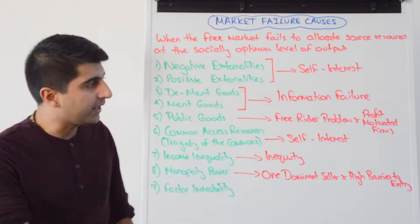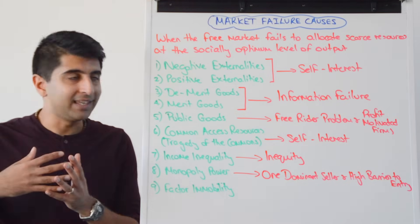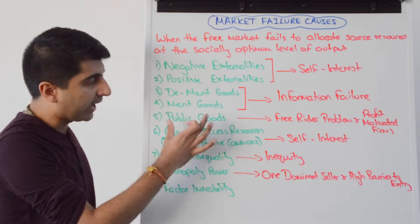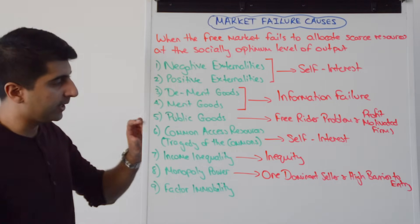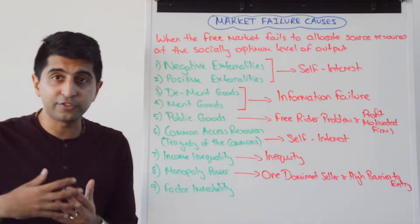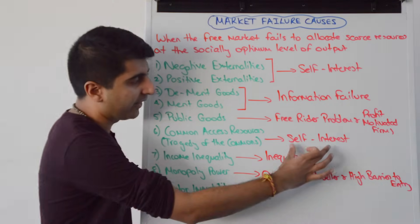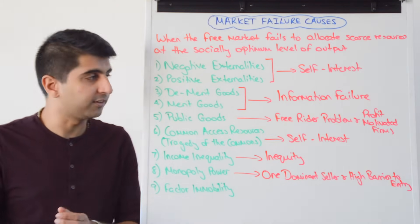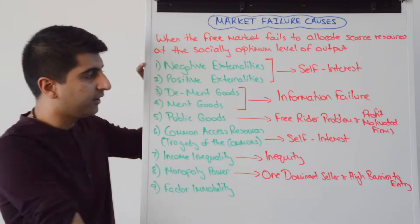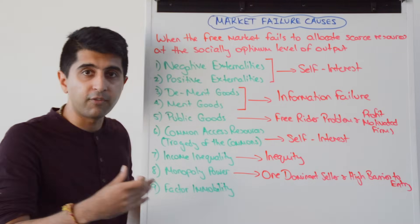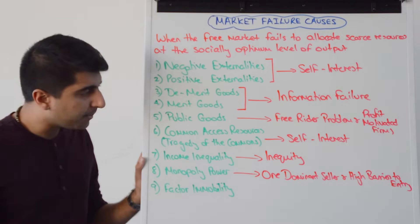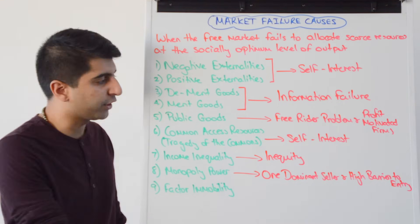When it comes to public goods, the issue is the free rider problem and the fact that firms are profit-motivated, meaning there will be no supply of public goods — making this a definite source of market failure. Common access resources will often be over-consumed and over-produced because of negative externalities in production, which links back to point one. Self-interest drives private producers to ignore external costs, leading to over-production and over-consumption.